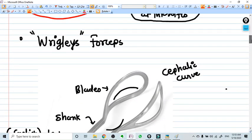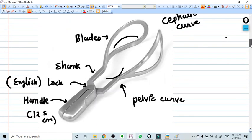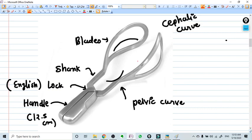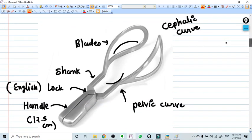Wrigley's forceps are the only forceps that is used in India nowadays. This is the Wrigley forceps. You need to identify the parts of the forceps for your practical exam purpose. For example, these are the two blades of the forceps, right and left blades. This is the cephalic curve. Why is it cephalic curve? Because it holds the cephalum, that is the head of the baby. This is the pelvic curve.